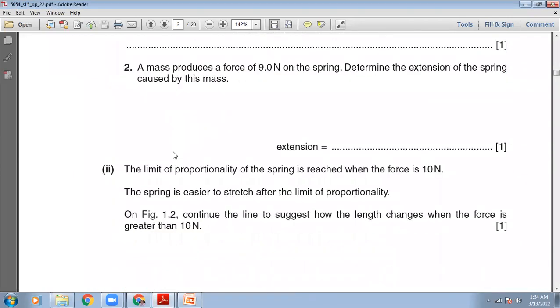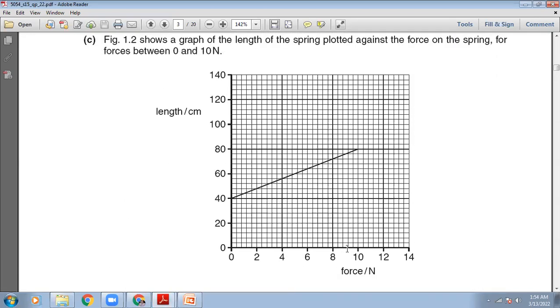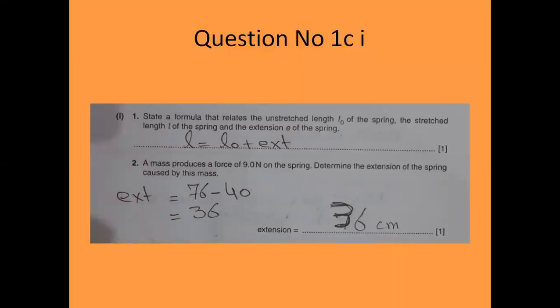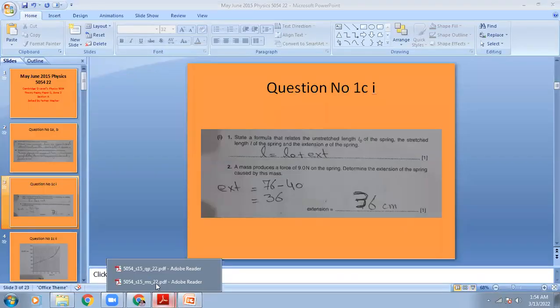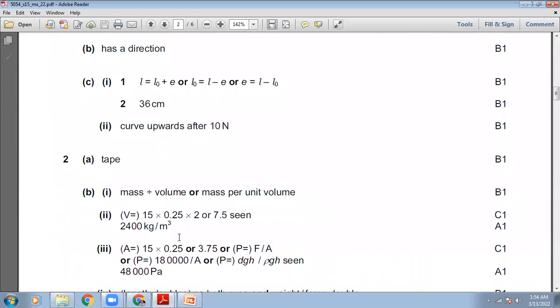The next question: a mass produces a force of 9 Newton on the spring. Determine the extension of the spring caused by this mass. We go to the graph — from 9 Newton, we read off the length, which is 76 centimeters. L0 is 40 centimeters. Extension = L − L0 = 76 − 40 = 36 centimeters. The extension is 36 centimeters. The marking scheme confirms 36 centimeters.